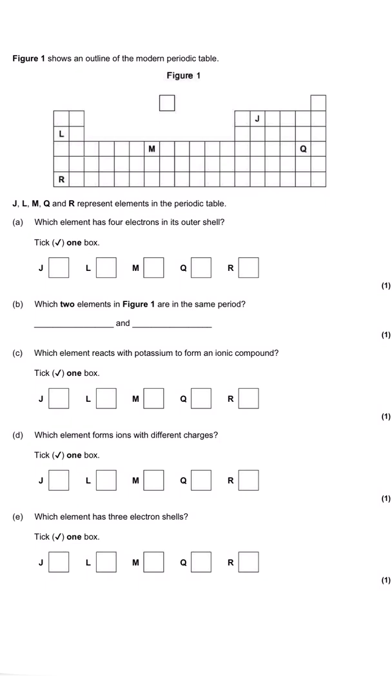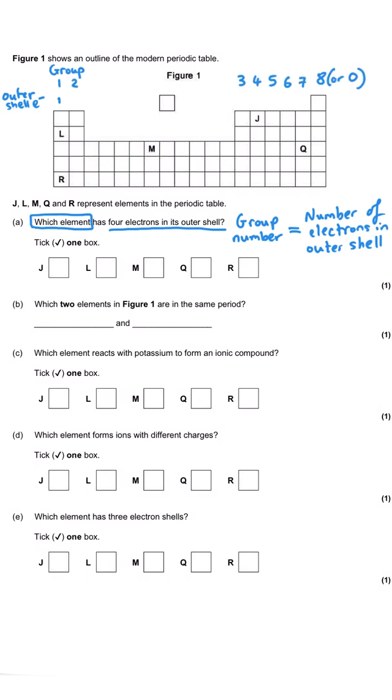The first question says, which element has four electrons in its outer shell? The chemistry content that you need to know here is that the group number for an element corresponds exactly with the number of electrons elements have in their outer shell. So the group one elements have one electron in their outer shell. You also need to know to overlook these transition elements for now. We find group one, group two, group three, group four. So the elements in group four have got four electrons in their outer shell, and so the correct answer is J.